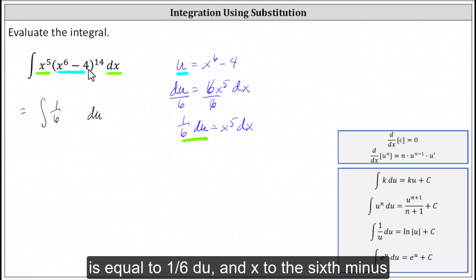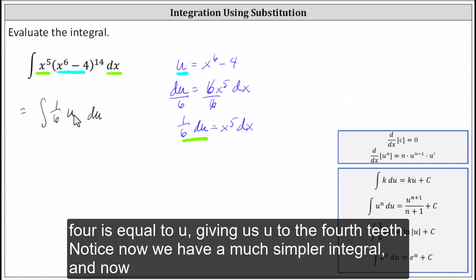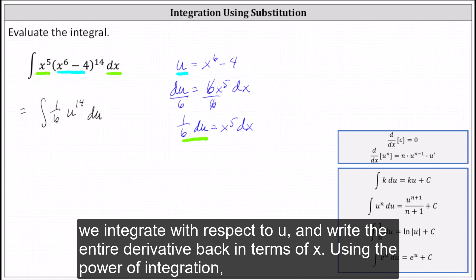And x to the sixth minus four is equal to u, giving us u to the 14th. Notice now we have a much simpler integral, and now we integrate with respect to u and write the anti-derivative back in terms of x.